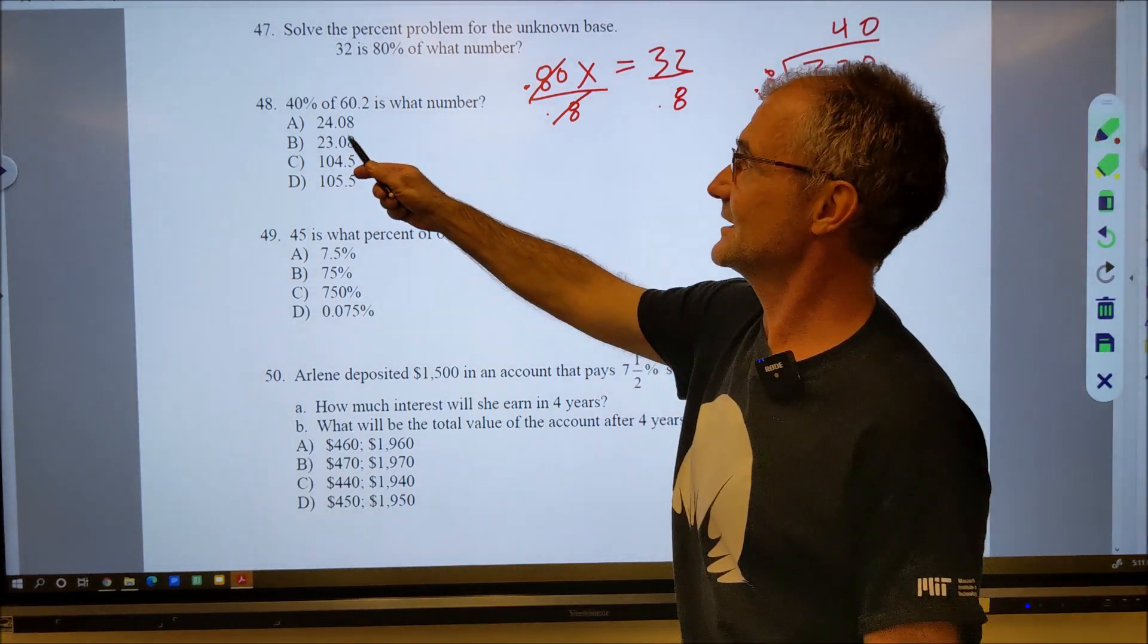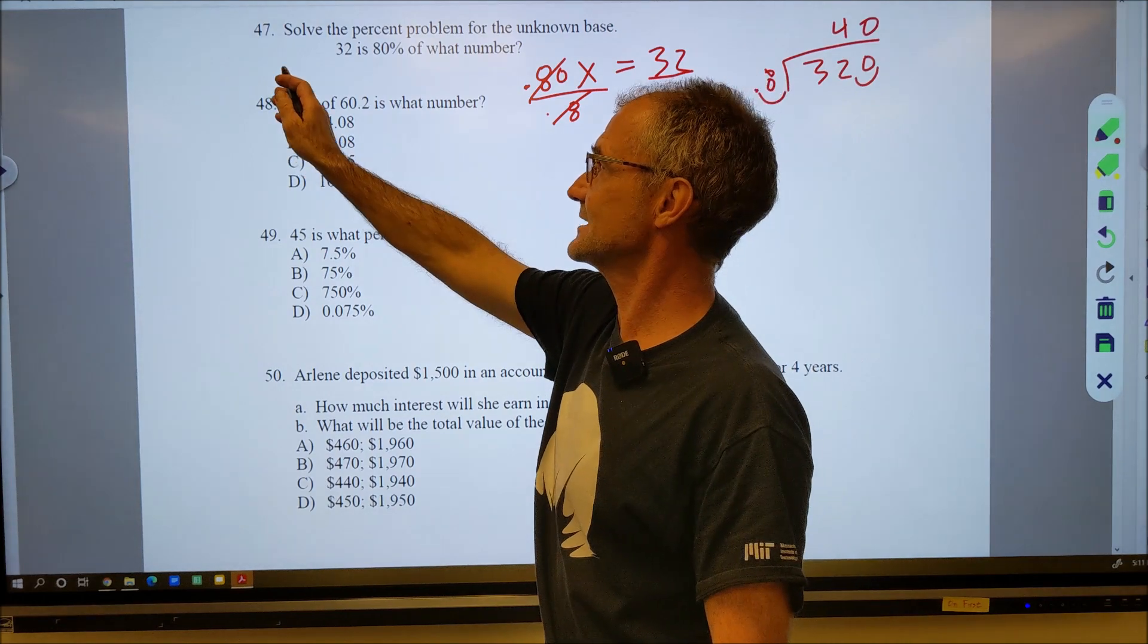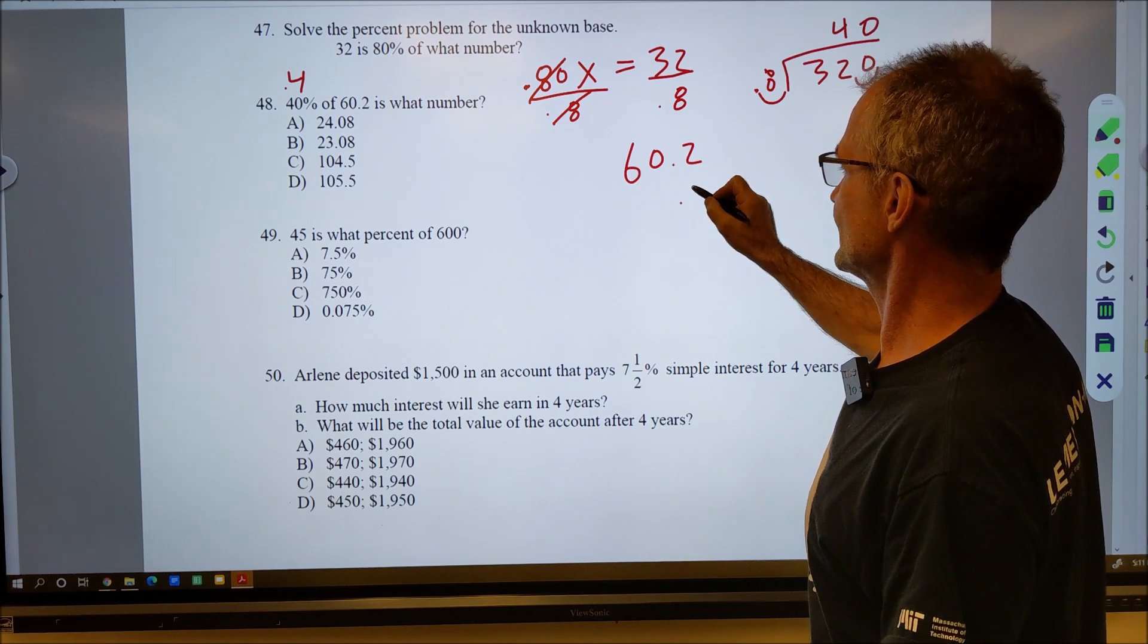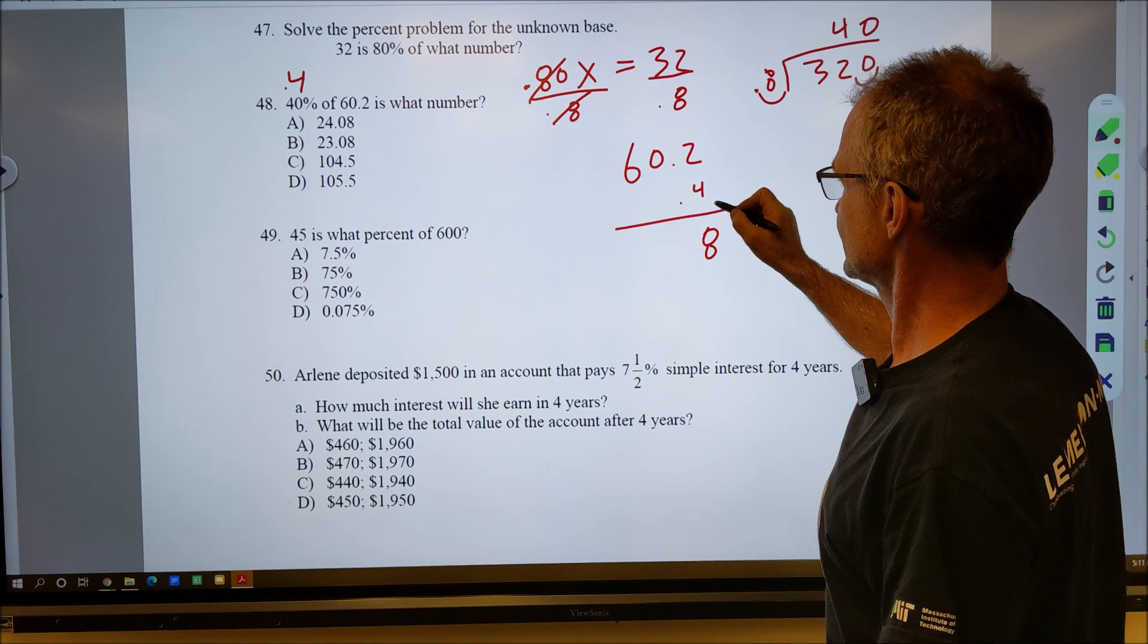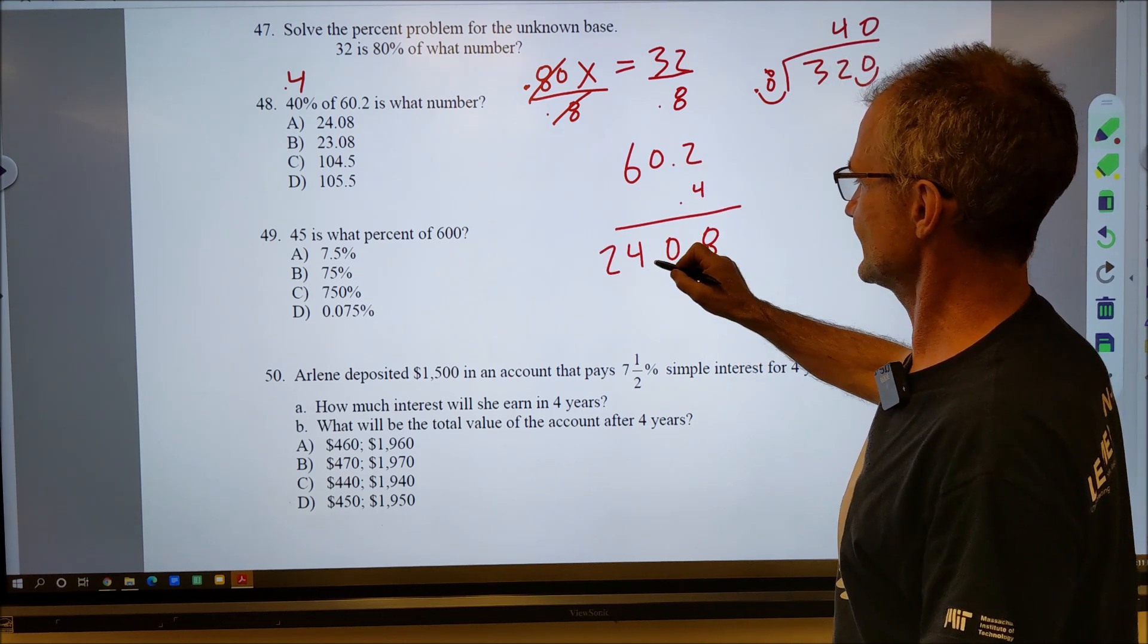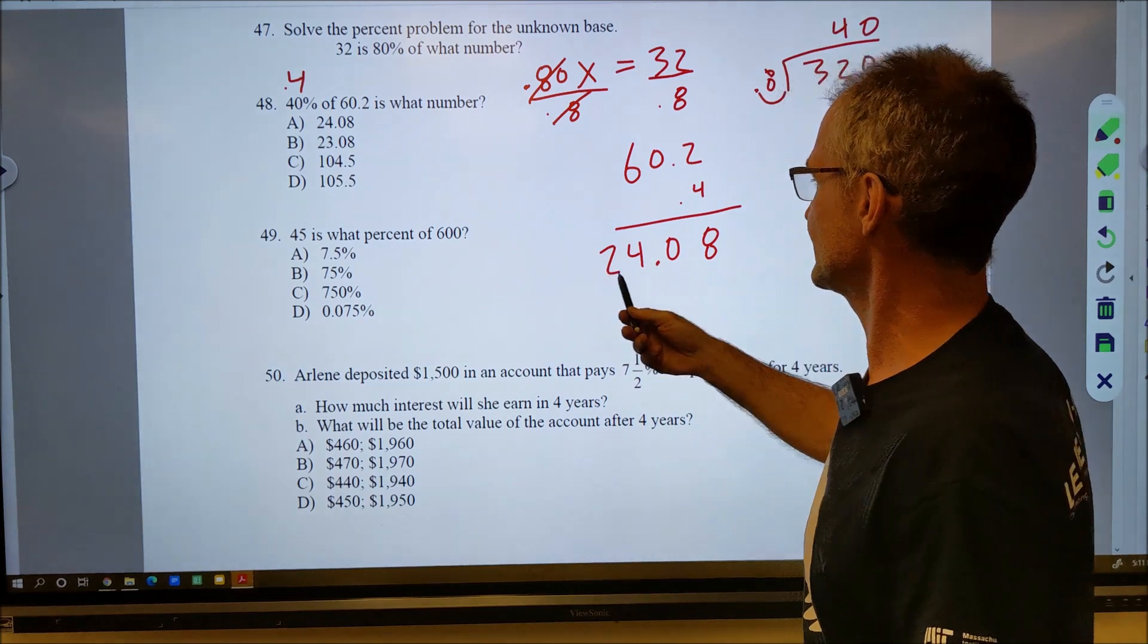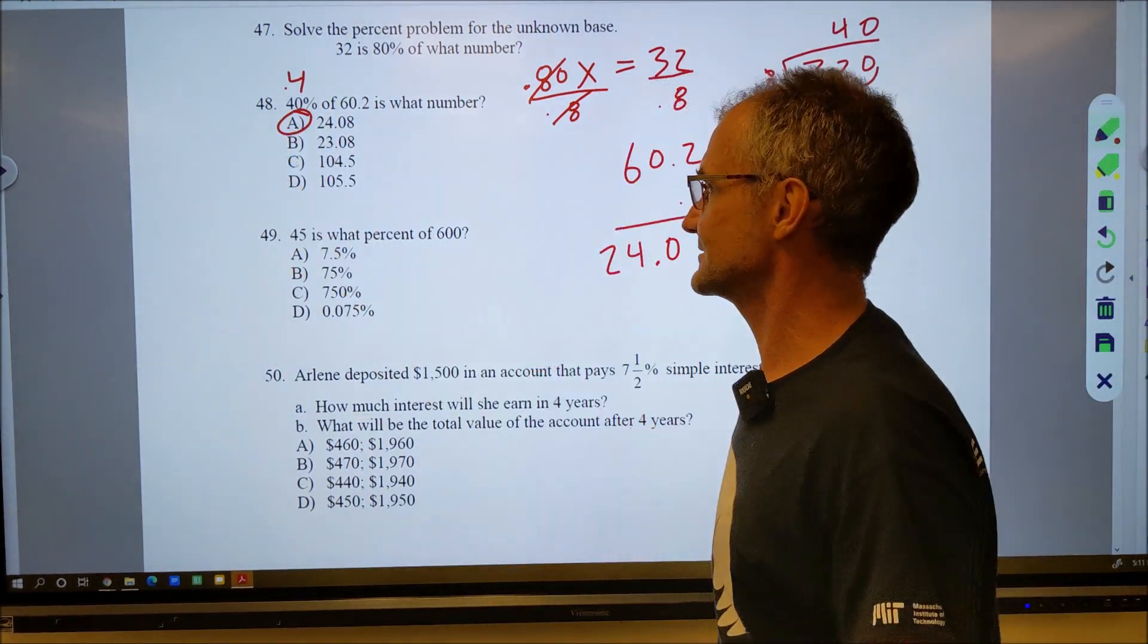Number 48: 40% of 60.2 is what number? Again, I'll turn that into a decimal, 0.4. Then I'm going to do 60.2 times 0.4 to get 8, 0, 24. My decimal is over 1, 2. So I have 24.08. So 40% of 60.2 is what number? 24.08. So it's going to be answer A.